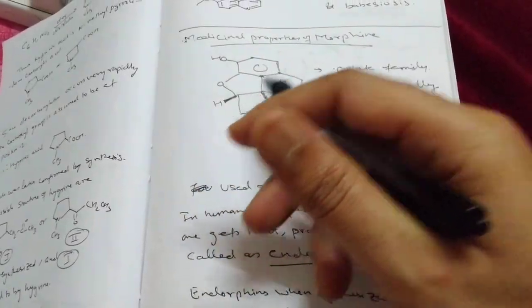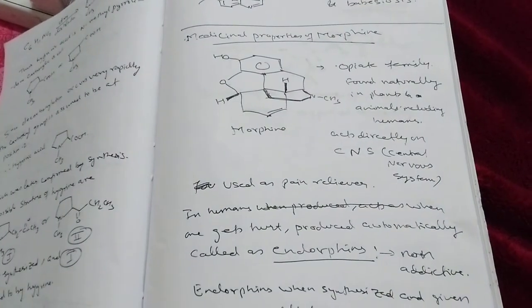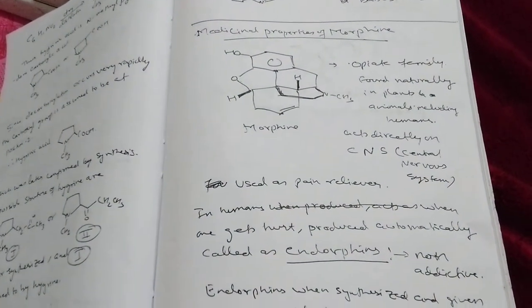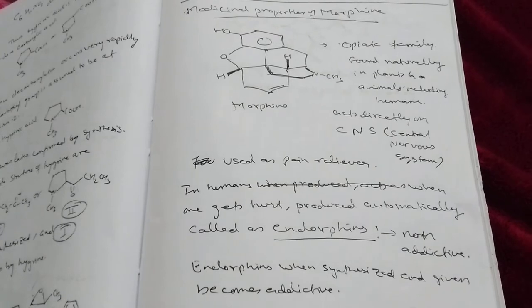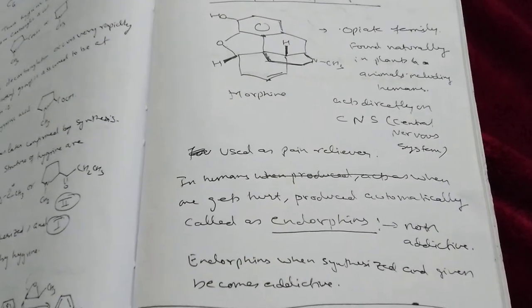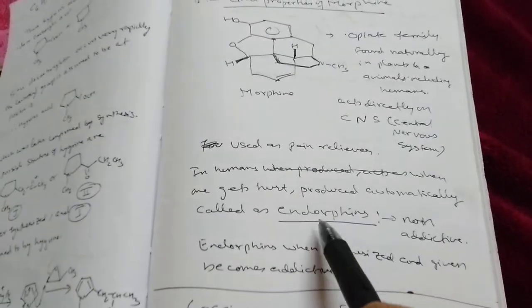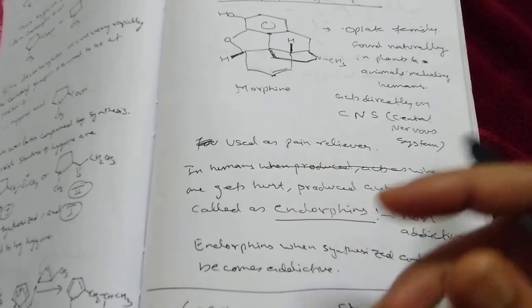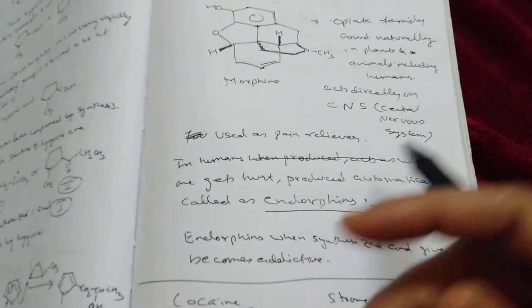Interestingly, morphine is the main problem which is big drug addiction. That's why it is not available, you go ask any medical staff they won't give you, but if doctor writes and gives they will. But endorphins they synthesize in lab, and when you start giving endorphins outside, this also becomes addictive, that's very interesting.